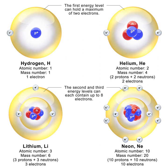For example, carbon has atomic number 6, and its abundant carbon-12 isotope has 6 neutrons, whereas its rare carbon-13 isotope has 7 neutrons. Some elements occur in nature with only one stable isotope, such as fluorine. Other elements occur with many stable isotopes, such as tin with 10 stable isotopes.